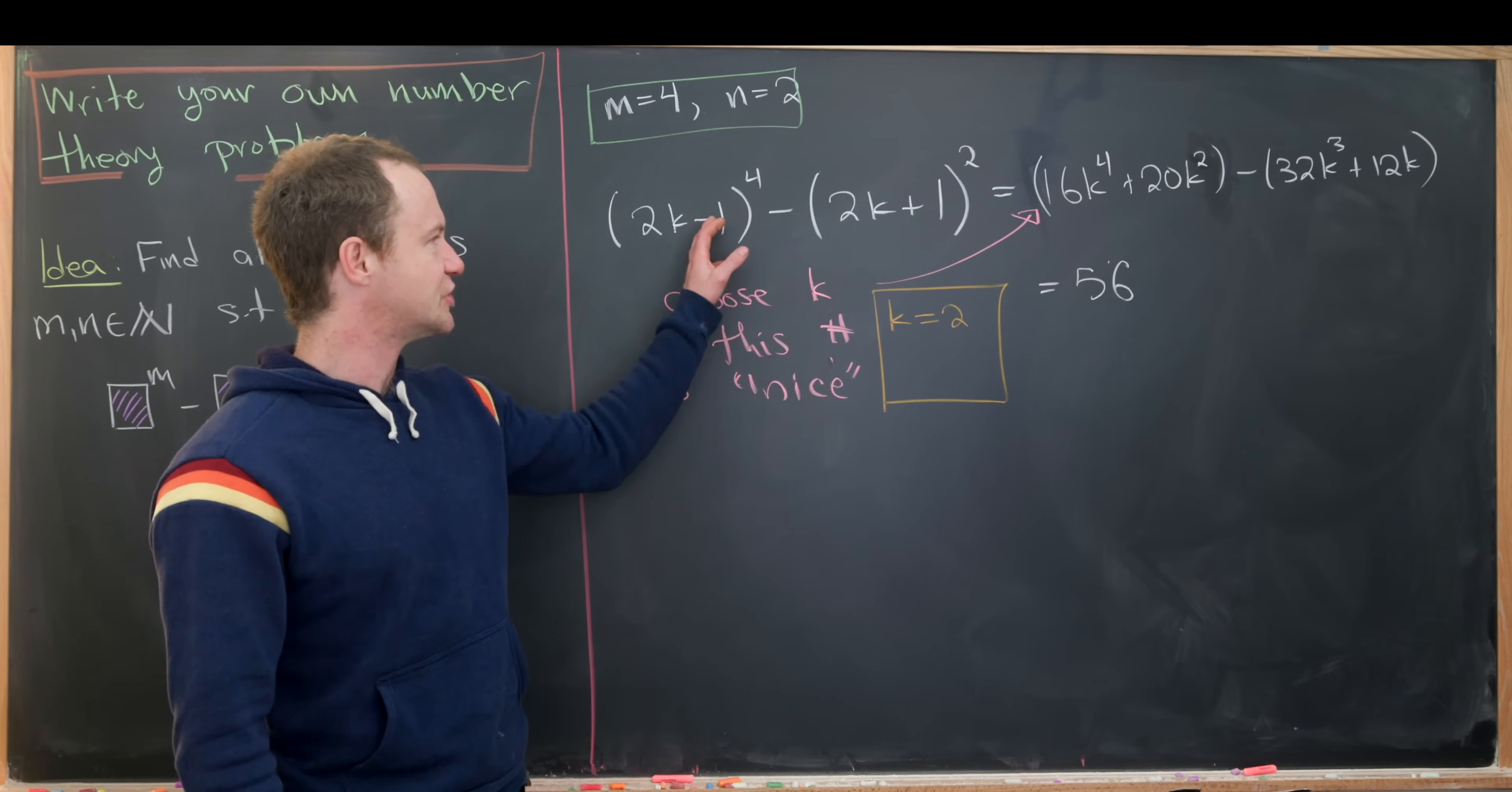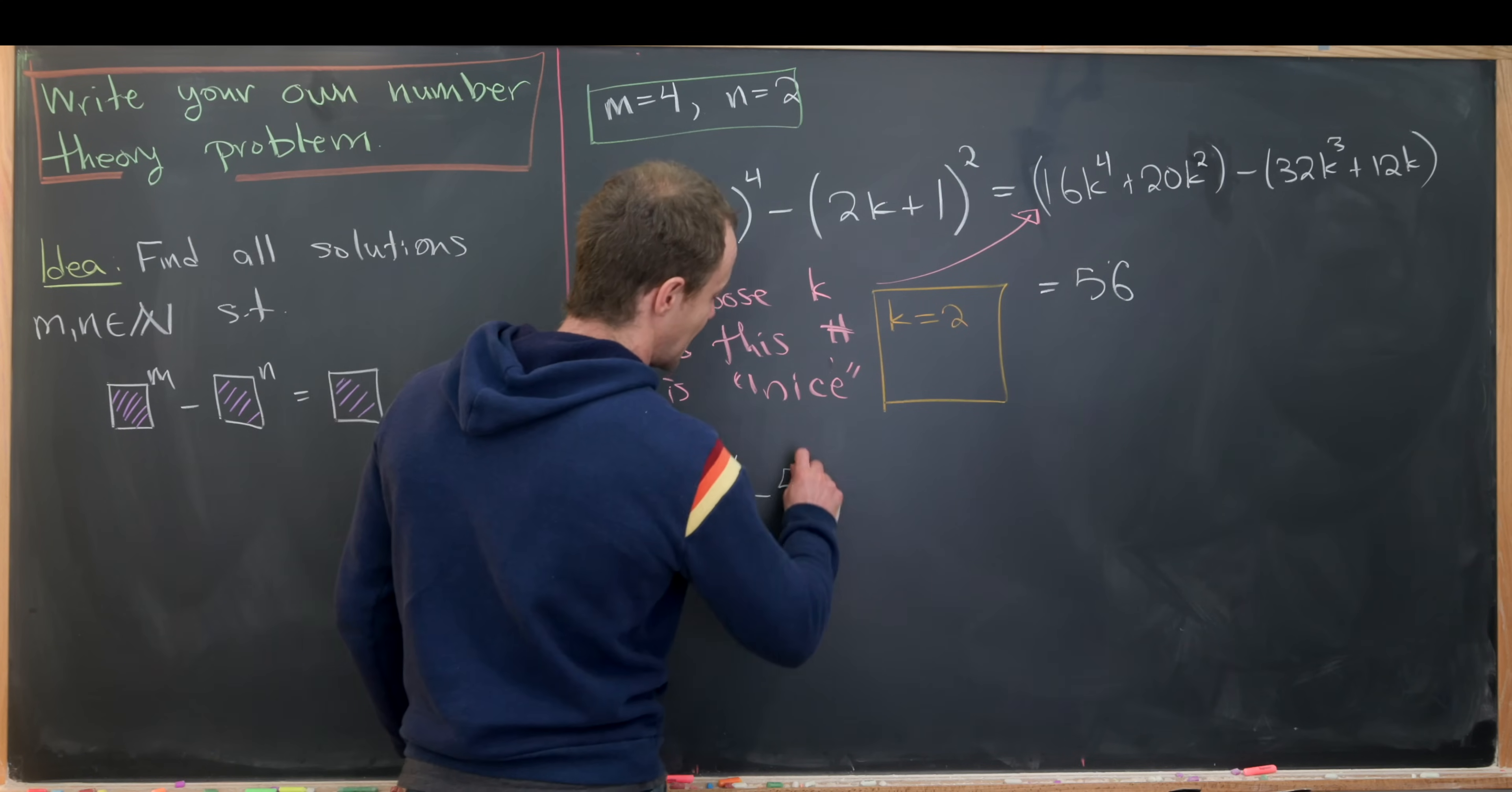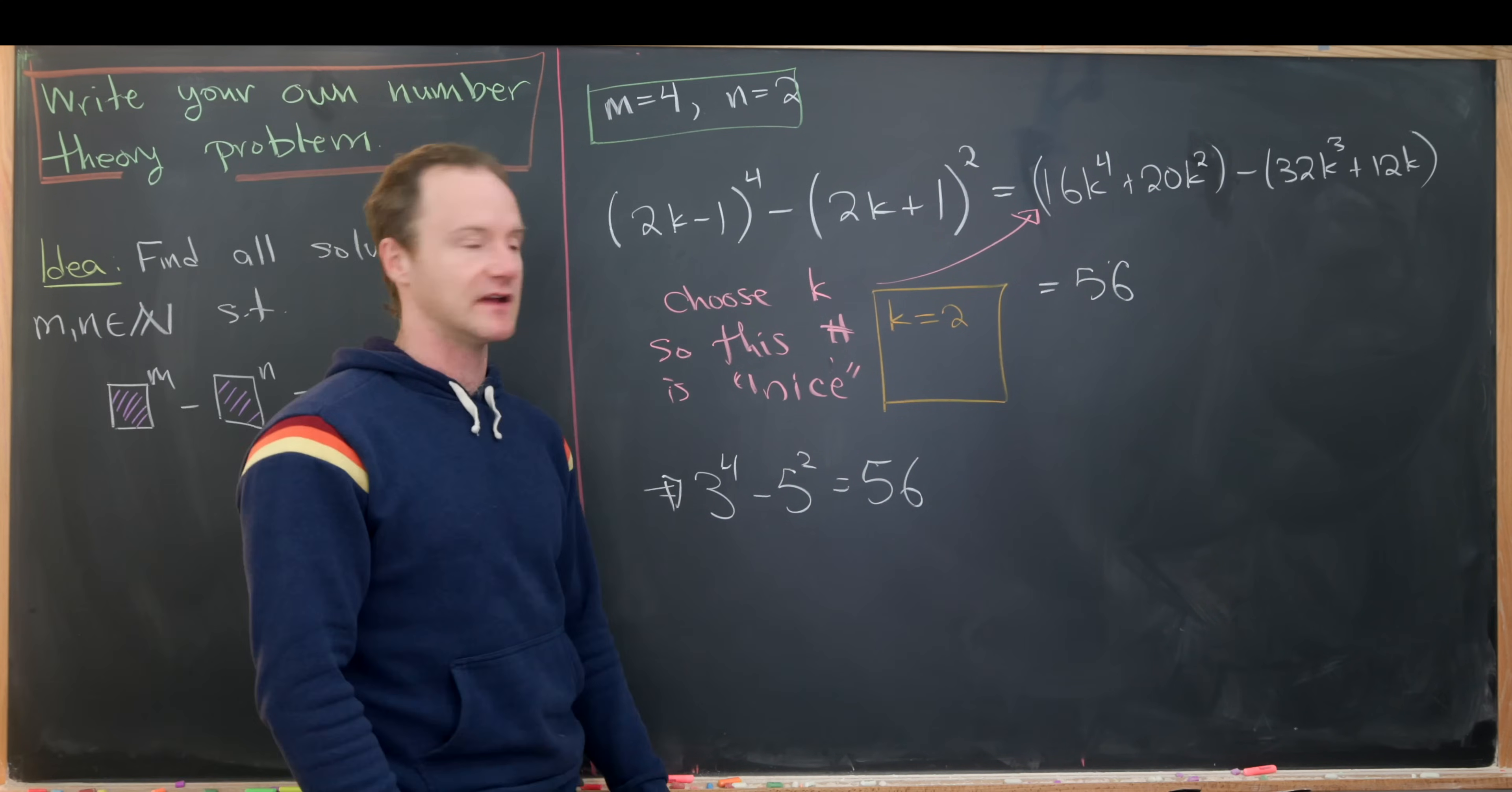Now plug in k equal to 2 here and here, we see that we now have the equation 3 to the 4 minus 5 squared equals 56, which checks out—that's 81 minus 25.